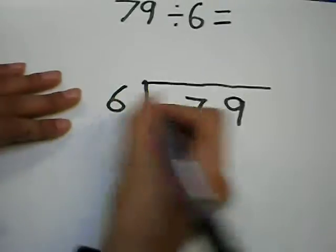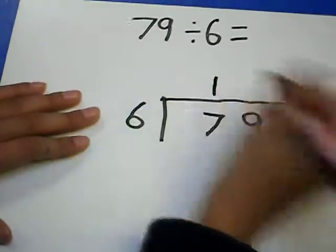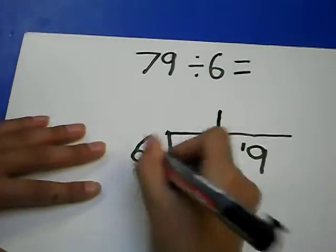Now, how many 6s go into 7? 1. Correct. Now you put a 1 there because there is going to be a remainder.